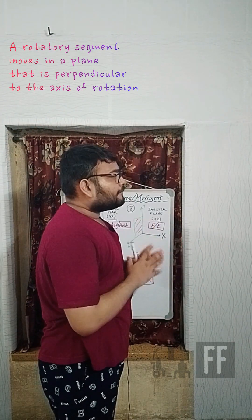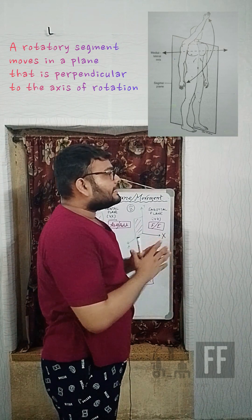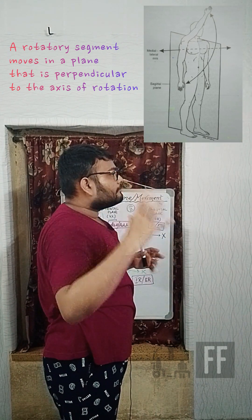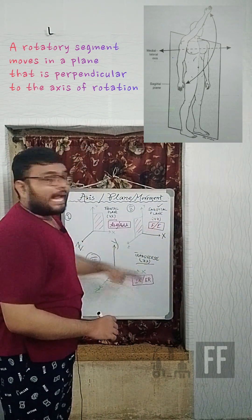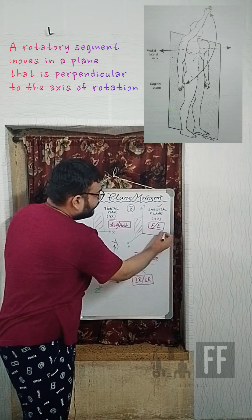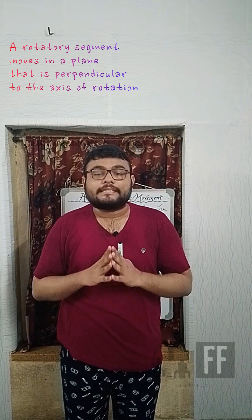The transverse plane divides the body into superior and inferior parts. There are three pairs of anatomical rotation possible in the human body. The first pair of movement is flexion and extension. You can see the movement from the side view — it occurs in the sagittal plane, or YZ plane, and perpendicular to that plane is the x-axis. So flexion and extension happen in the sagittal plane around the x-axis.